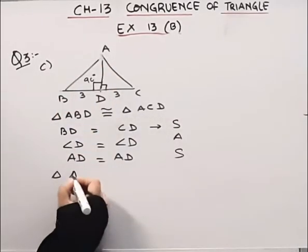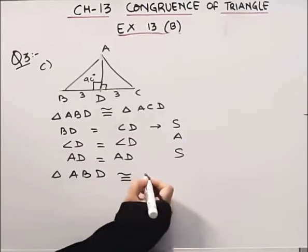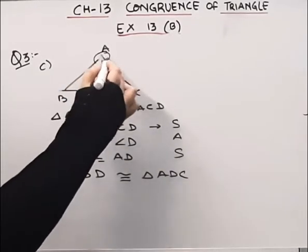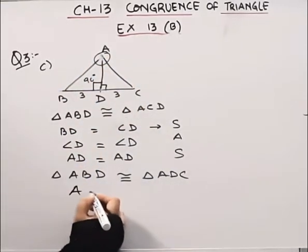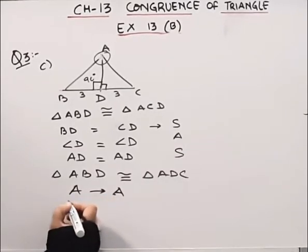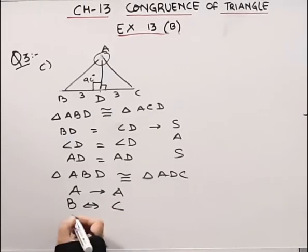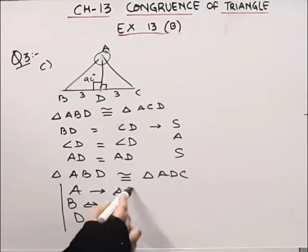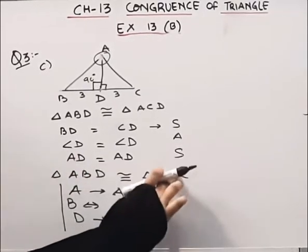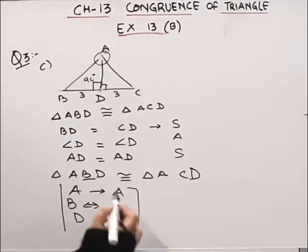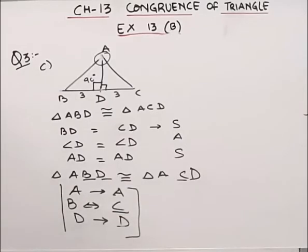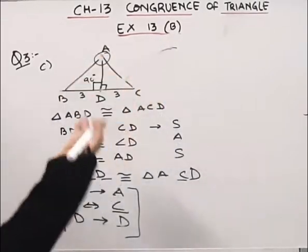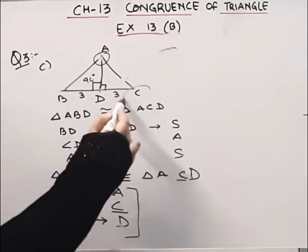Triangle ABD is congruent to triangle ACD. Here we have side A, angle A, side A — that is the SAS criteria. Point A corresponds to A, point B corresponds to C, point D corresponds to D. So we write triangle ABD congruent to triangle ACD. If you understand with a paper — when we overlap, C falls on B.